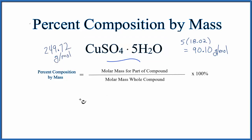So in our equation, we take the 90.10 grams per mole and divide by the molar mass for the whole thing, which is 249.72, and multiply by 100. The grams per mole are on the top and bottom, so they'll cancel out and the percent won't have any units.